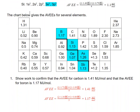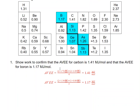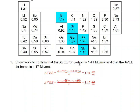Here are the AVEEs for several elements. The first question is to confirm the AVEE for boron and carbon. Carbon has two S electrons and two P electrons. Multiplying by the ionization energies from the chart above and dividing by the total number of valence electrons, we get these values, and they do match.